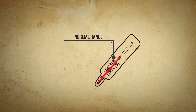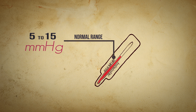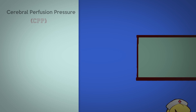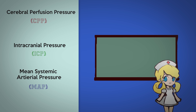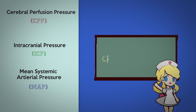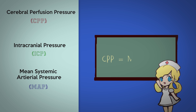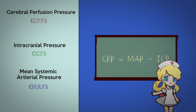The normal range of intracranial pressure is between 5 and 15 mmHg and remains constant despite small increases in blood volume. Cerebral perfusion pressure depends on mean systemic arterial pressure and intracranial pressure through the equation: CPP equals MAP minus ICP.